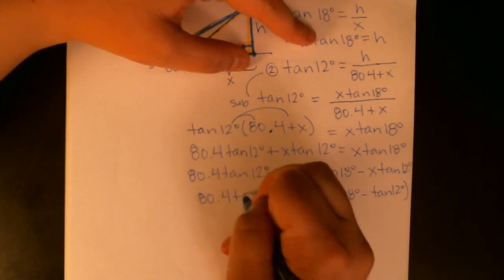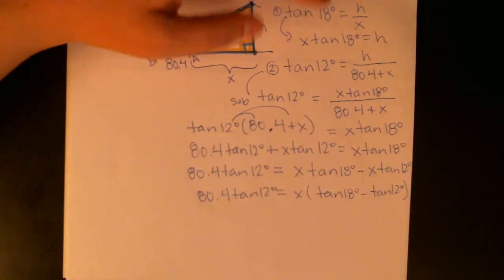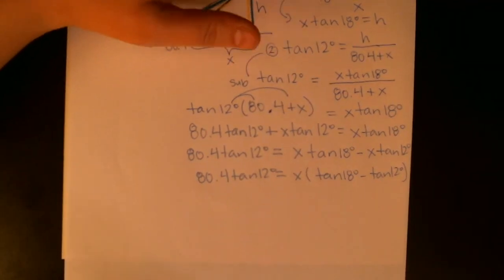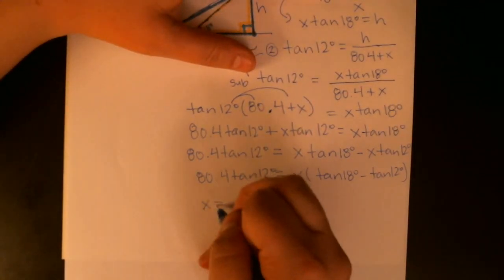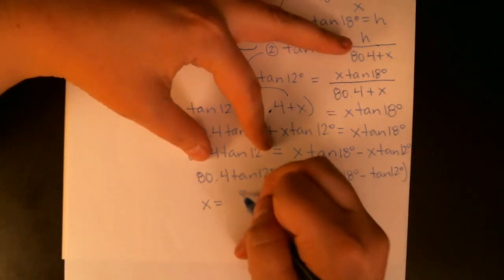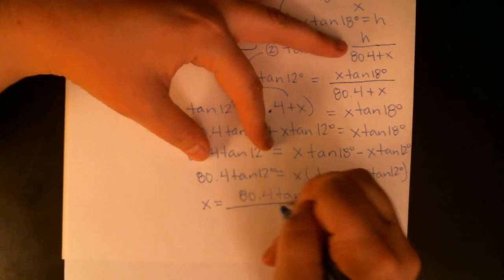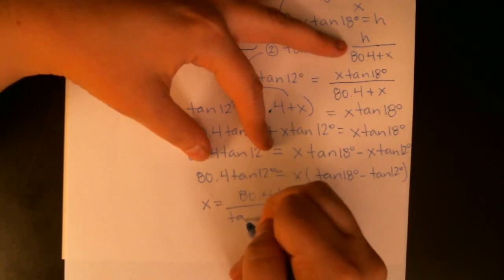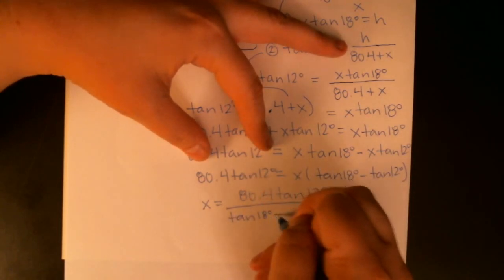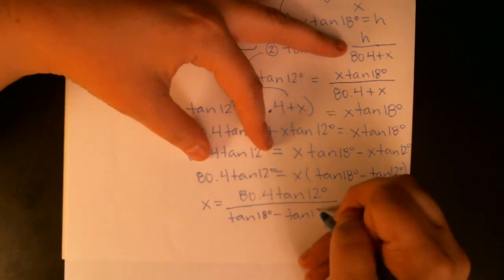I'm not doing anything to the left-hand side in this step. And then the last step is to divide by all of that. So it ends up being x is equal to 80.4 tangent 12 degrees divided by tangent 18 degrees minus tangent 12 degrees.